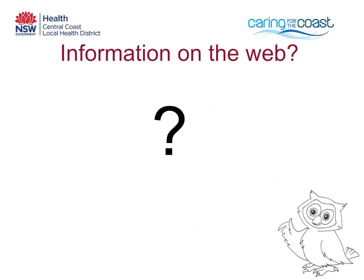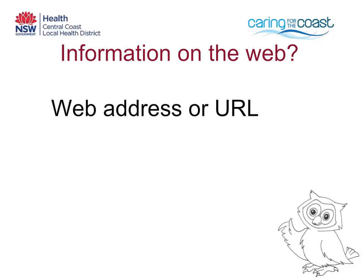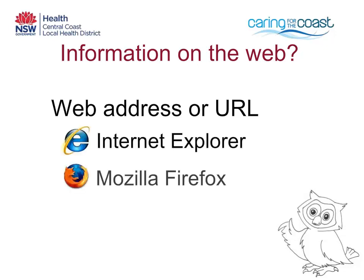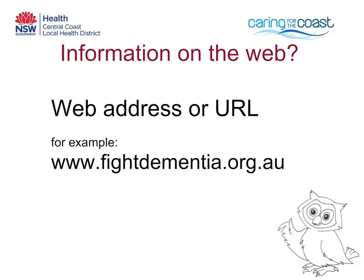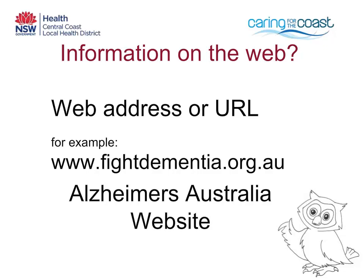So how do you go about finding reliable health information on the internet? Firstly, if you know the web address, sometimes called a URL, of a particular website, then you can type it directly into the address bar of the browser you are using. Commonly used browsers are Internet Explorer, Mozilla Firefox and Safari. For example, typing www.fightdementia.org.au into a browser will take you directly to the Alzheimer's Australia website.